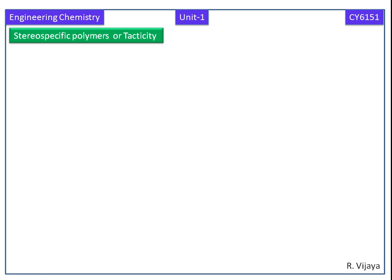In this video we are going to discuss stereospecific polymers or tacticity. This is one of the properties of polymer.